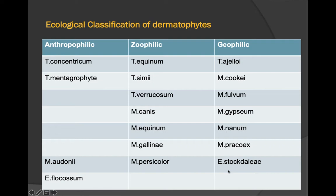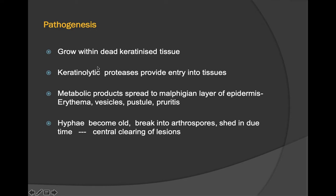Regarding pathogenesis, these fungi grow within dead keratinized tissue. Keratinolytic proteases provide entry into deeper tissues, and metabolic products spread to the Malpighian layer of the epidermis, causing erythema, vesicles, pustules, and pruritus. The hyphae become old, break into arthrospores, and are shed — causing central clearing of the lesions.